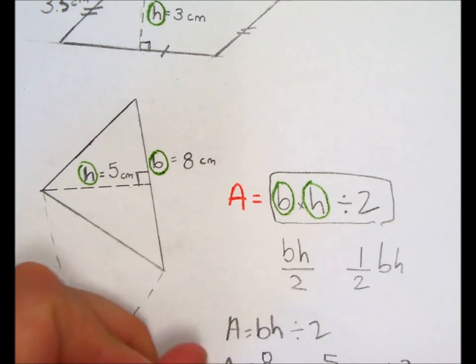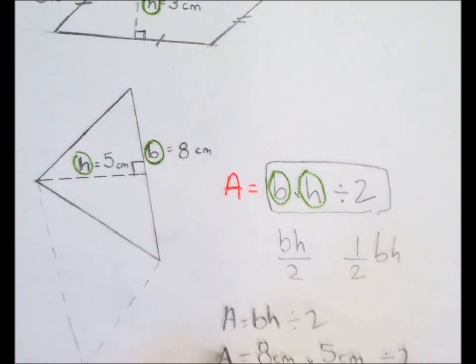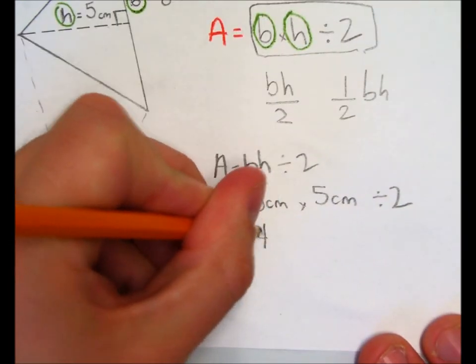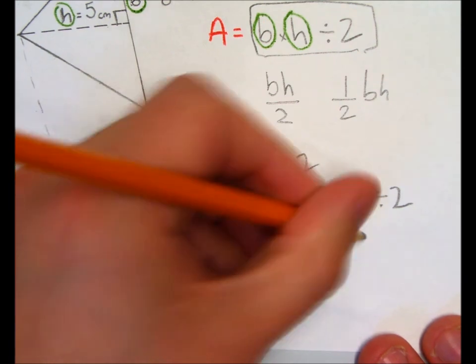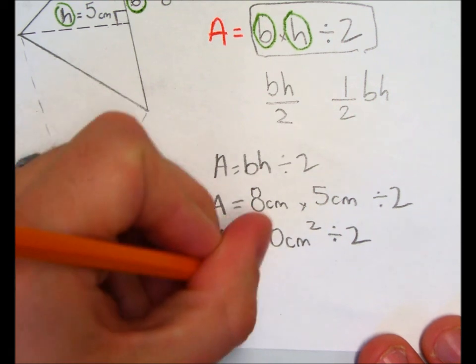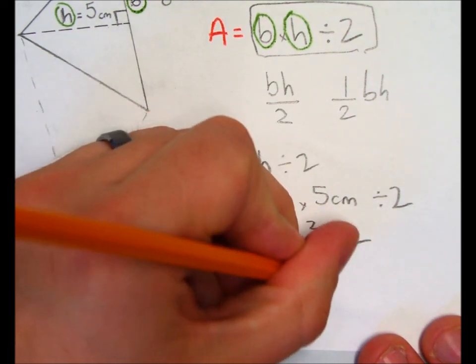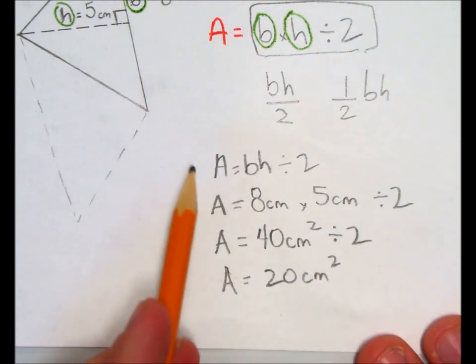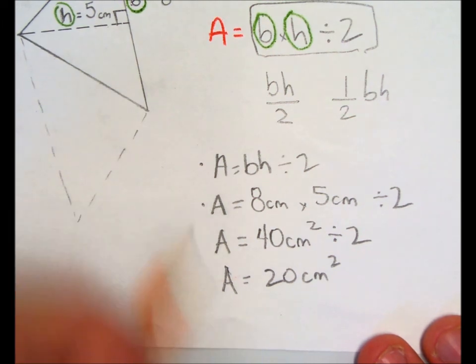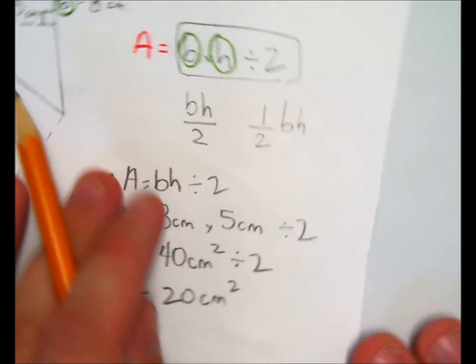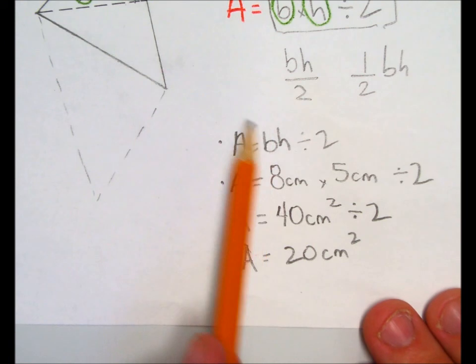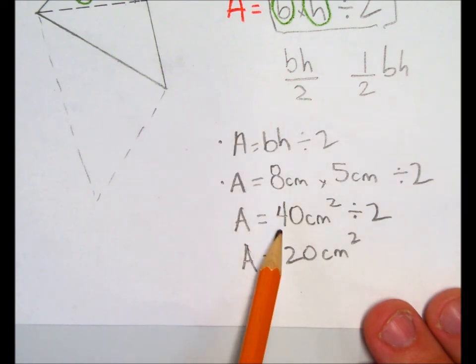So, therefore, our area is 40 centimeters squared divided by 2. And so, the area of this triangle, therefore, is 20 square centimeters. Again, indicate your formula. Substitute your numbers that you have for the variables that you do know. So, these are the things we know. We know our base. We know our height. And then just rewrite the equation with every step.